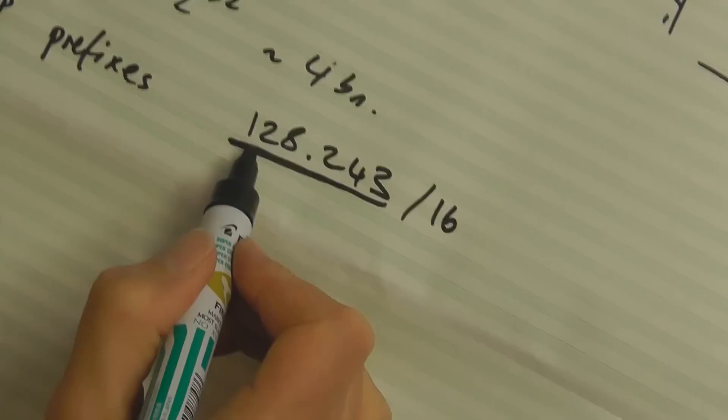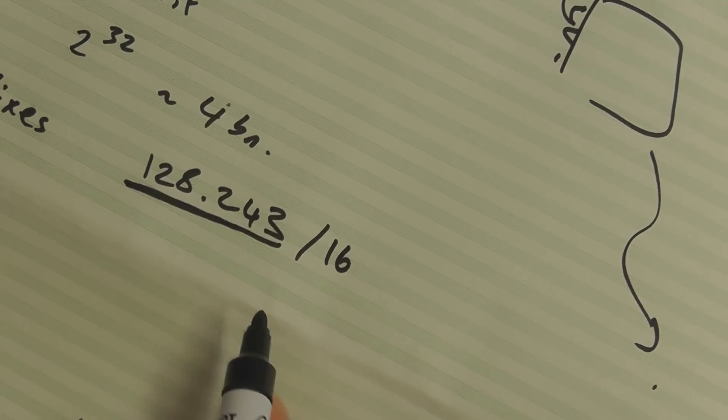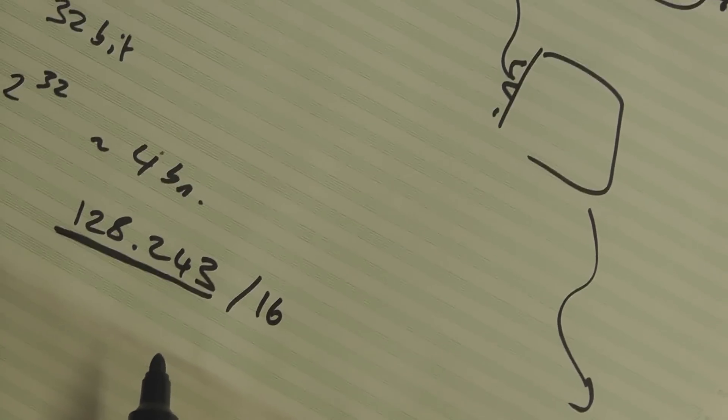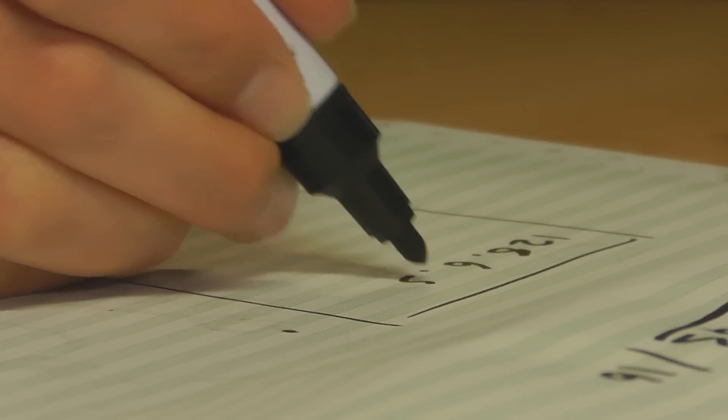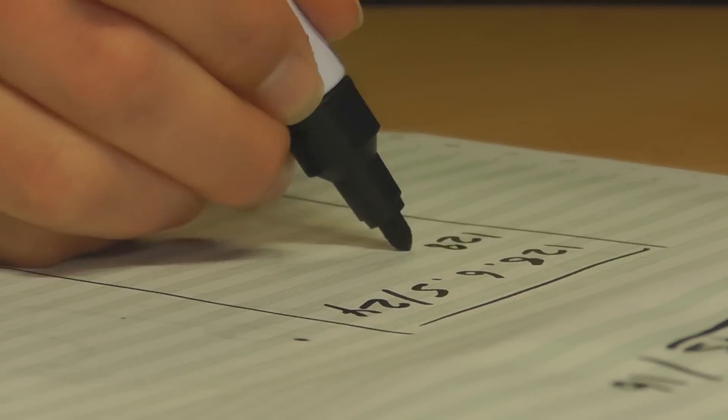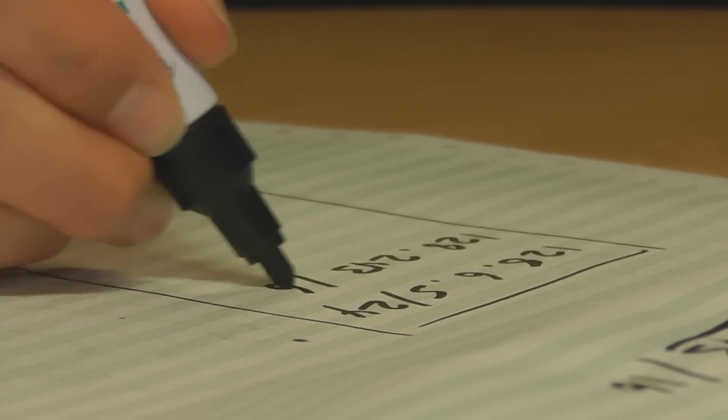So a router out on the internet will receive a packet whose destination is 128.243.6.7 or something, and it doesn't need to look up exactly that address - it just matches the prefix. This table of entries might have 128.243.6.5/24, it might have 128.243/16, lots of different prefixes.